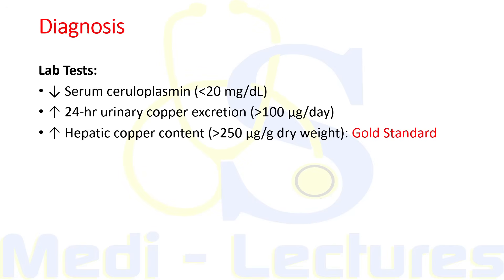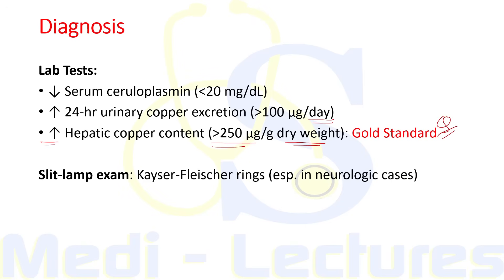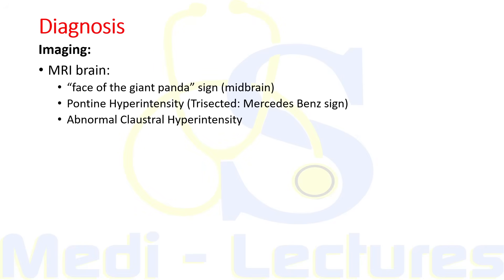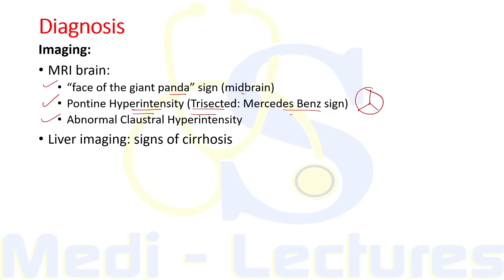In labs, there will be decreased serum ceruloplasmin (less than 20 mg/dL), increased 24-hour urinary copper excretion (more than 100 micrograms per day). The gold standard is liver biopsy showing increased hepatic copper content more than 250 micrograms per gram dry weight of liver. MRI brain can show named findings including the 'face of giant panda' sign on midbrain, pontine hyperintensity seen as a Mercedes-Benz sign (a trisected hyperintensity), and abnormal cluster hyperintensities.